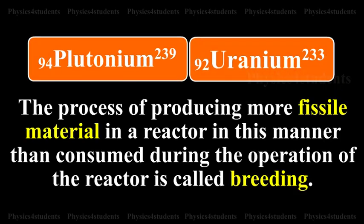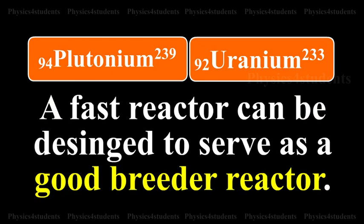The process of producing more fissile material in a reactor in this manner than consumed during the operation of the reactor is called breeding. A fast reactor can be designed to serve as a good breeder reactor.